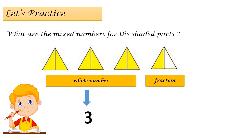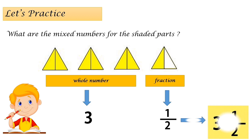two, and three. And the fraction is divided into two parts with one shaded, so it's a half. So how do we write a mixed number? By representing the two numbers together — three and a half is a mixed number.